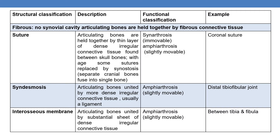Now let us discuss in detail about each type of joint based on structural classification, functional classification, and example. First, fibrous joints: there is no synovial cavity and the articulating bones are held together by fibrous connective tissue. Examples of fibrous joints are sutures, syndesmosis, and interosseous membrane.